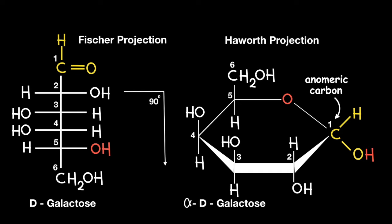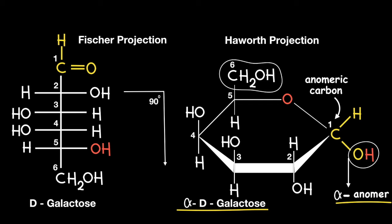You also need to be aware of the relative position of the newly formed OH group on the anomeric carbon and whether it is on the same or opposite side of the ring to that of the CH2OH group. The current illustration depicts the OH pointing down, on the opposite side of the ring to the CH2OH group. The key words here are 'on opposite side.' In this case it would be labelled the alpha anomer and would be called alpha-D-galactose.